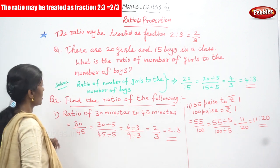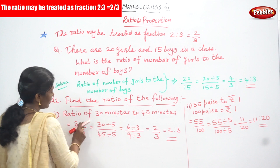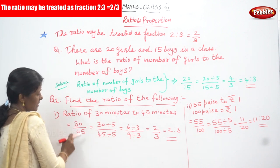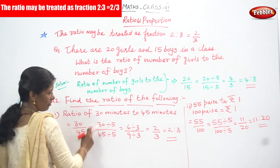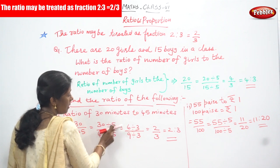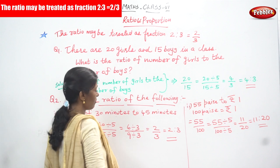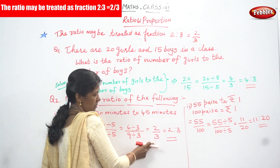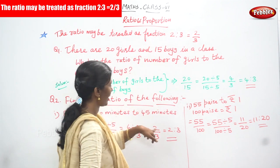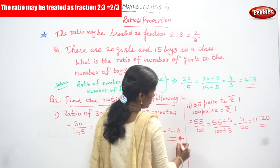Second question: find the ratio of the following. First: ratio of 30 minutes to 45 minutes. Write it in division form: 30 divided by 45. Simplify with common divisor 5 — 30 divided by 5 gives 6, 45 divided by 5 gives 9. Simplify again with common divisor 3 — 6 divided by 3 gives 2, 9 divided by 3 gives 3. So 2 by 3, which means ratio is 2 is to 3.